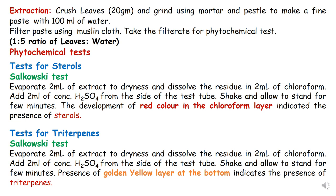Dissolve the residue in 2 ml of chloroform. To this chloroform-residue mixture, add 2 ml of concentrated H₂SO₄ from the sides of the test tube. Shake and allow to stand for a few minutes. If a red color develops in the chloroform layer, it indicates the presence of sterols — the red color in the chloroform layer is the positive test for sterol.